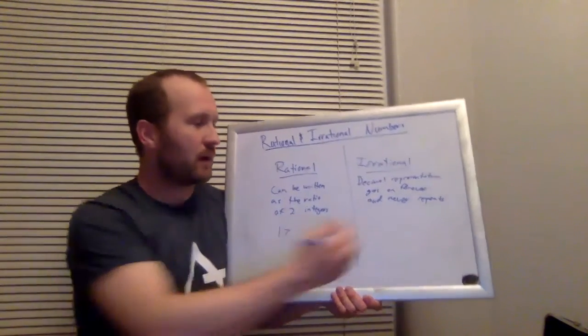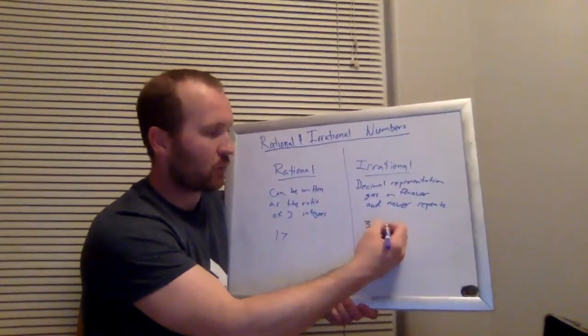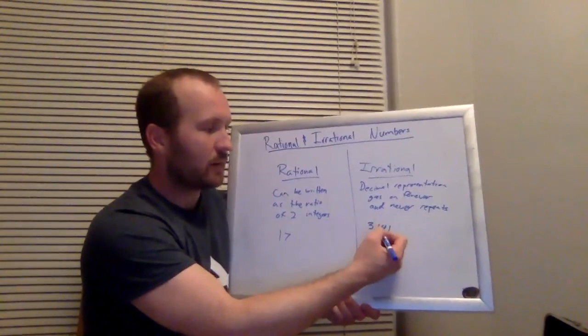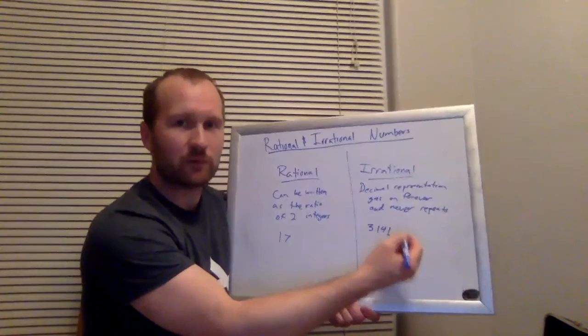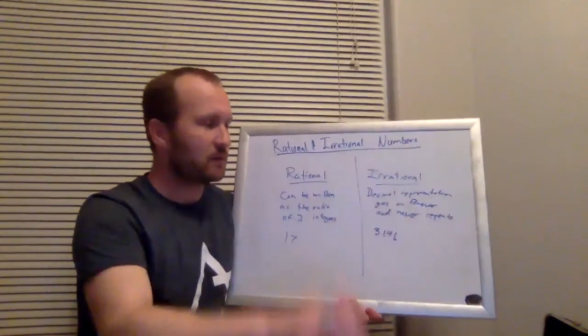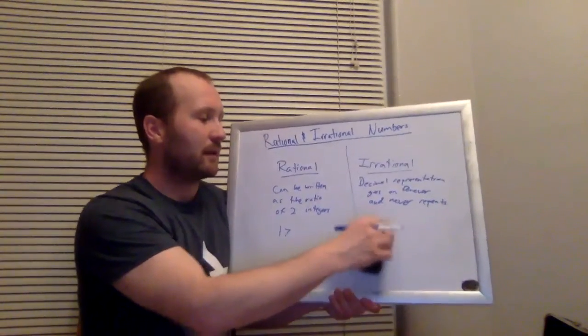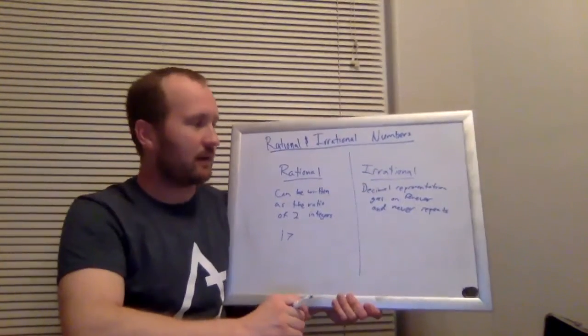And by repeats, I mean it doesn't repeat in a predictable sequence for the rest of the number. So, you know, you might know that like pi, 3.141, it does have another one in it, but it's not 3.1414141414141. So there's never a repeated pattern that terminates that number.